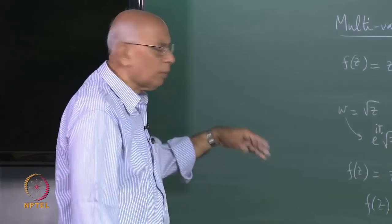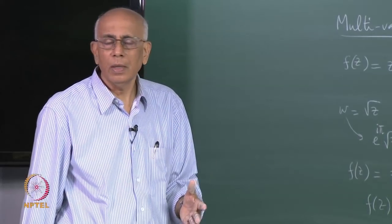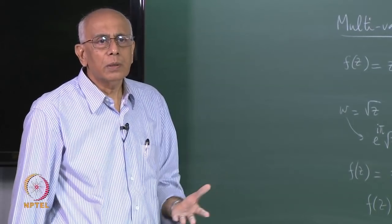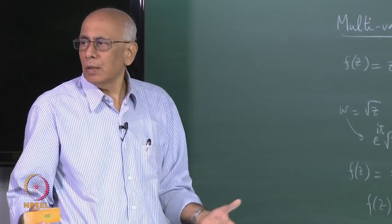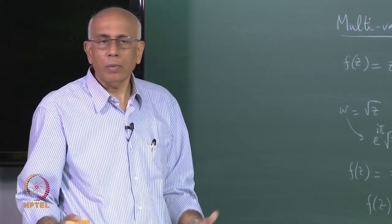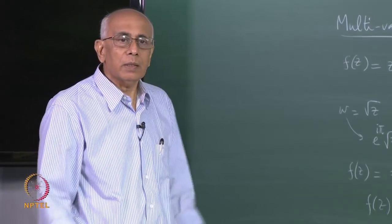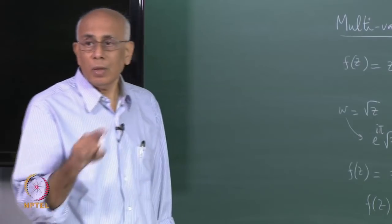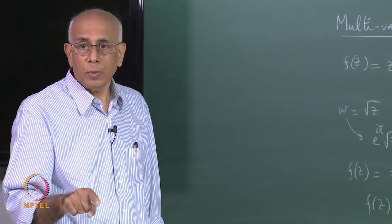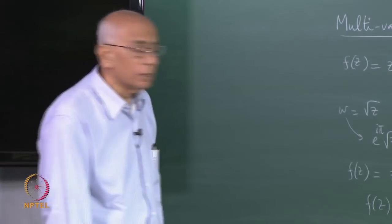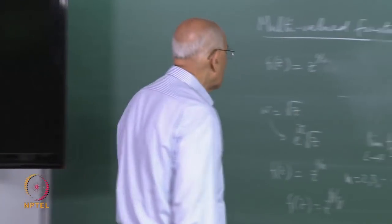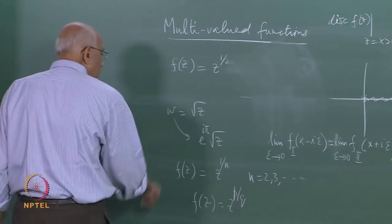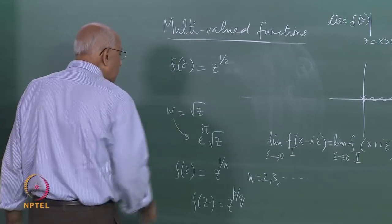What happens to the function z^(p/q), where p and q are integers? After cancelling common factors, p and q are coprime and q ≥ 2. This function would have q sheets, because the p in the numerator is completely irrelevant — after all z^3 is completely single valued, but z^(3/2) has a branch point.